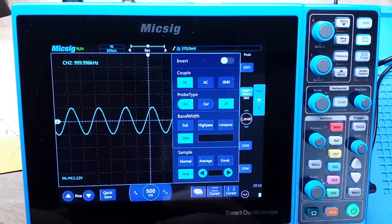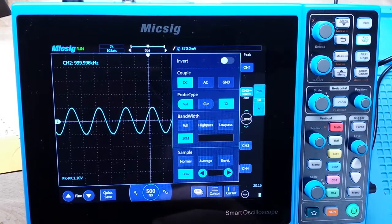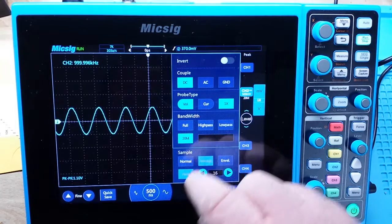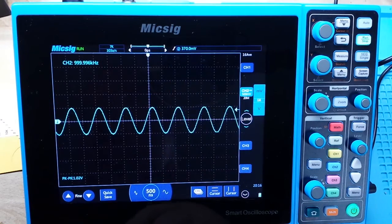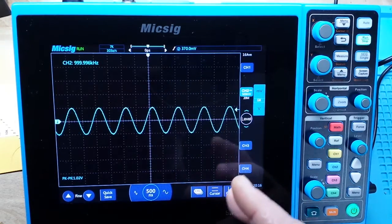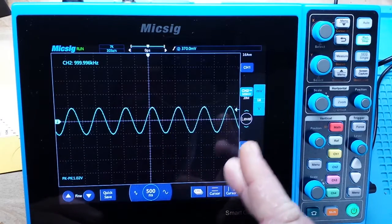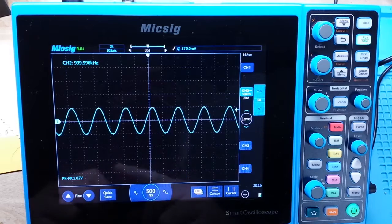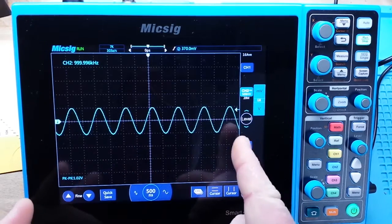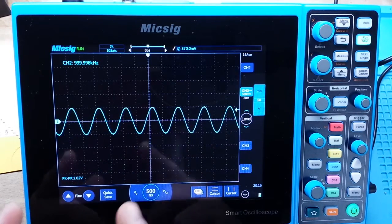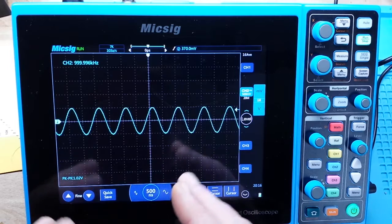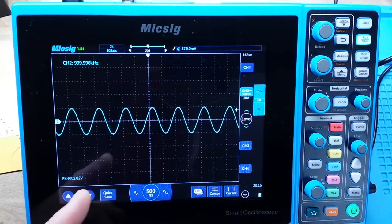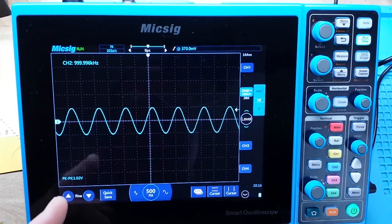After that we're going to have averaging mode. This one is a useful one. In averaging mode, the sample points are saved from multiple waveforms. Say it samples a hundred waveforms, and then what it does is it averages those points. What peak detect or averaging mode is good for is eliminating random noise on your signal.